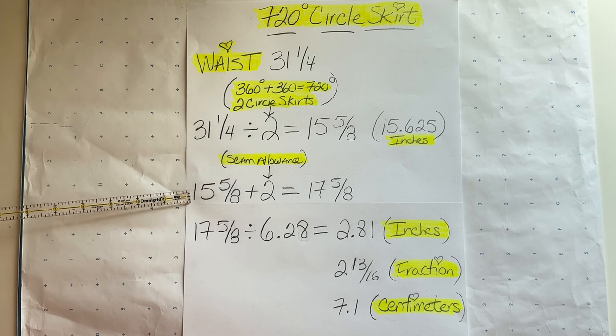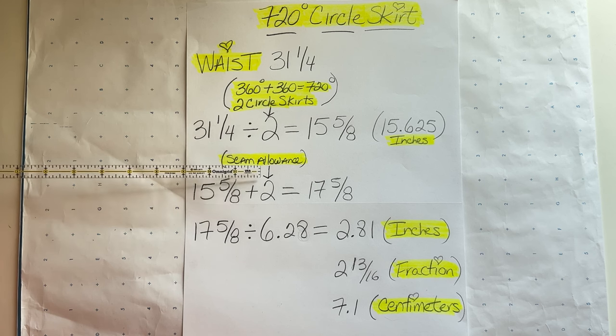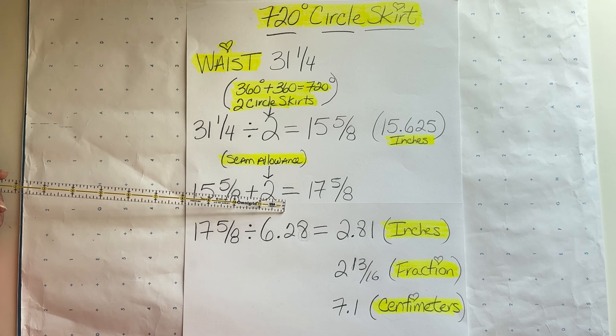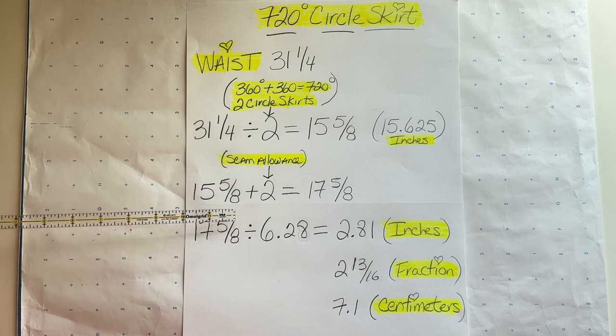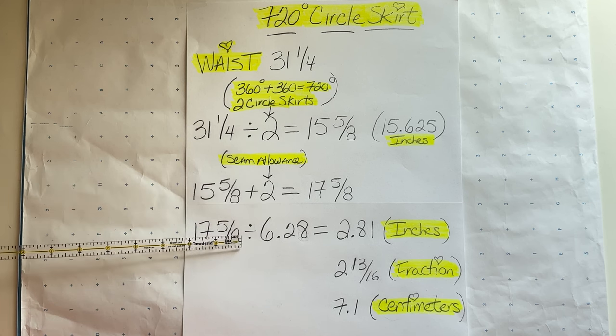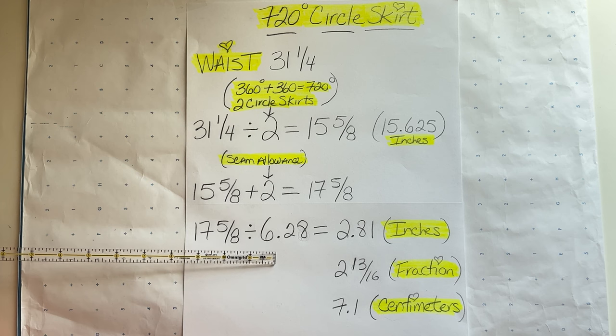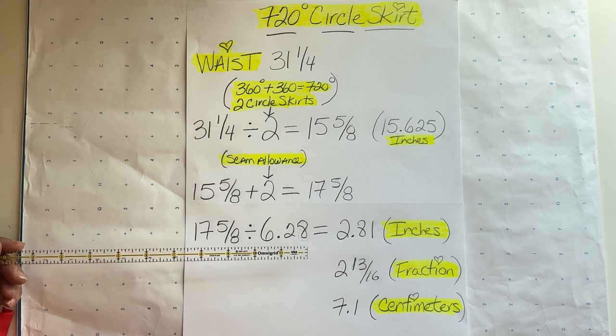Then take the 15 and 5/8 plus 2 inches seam allowance and that equals 17 and 5/8. After that, take the 17 and 5/8 and divide it by 6.28. The answer will be 2.81 inches.